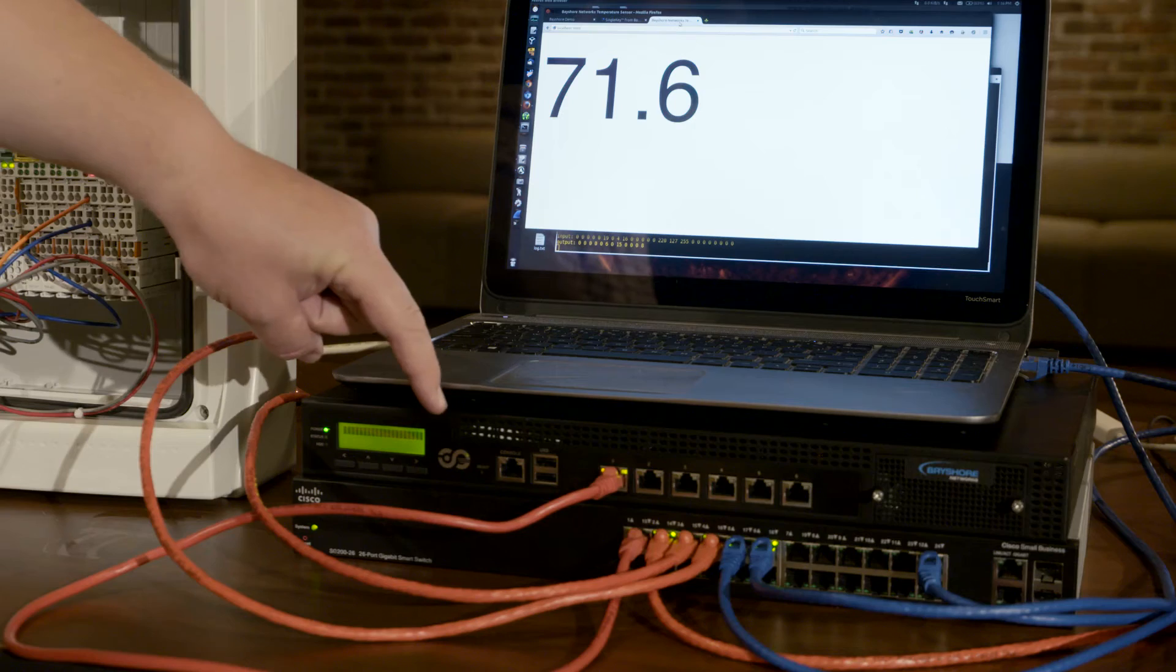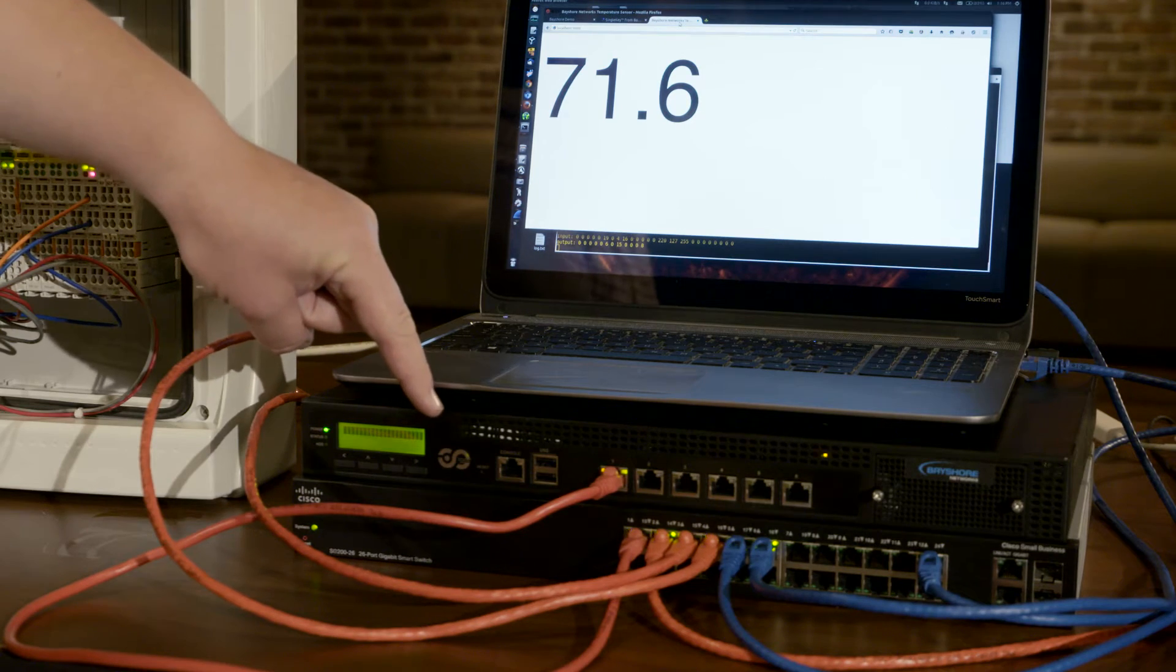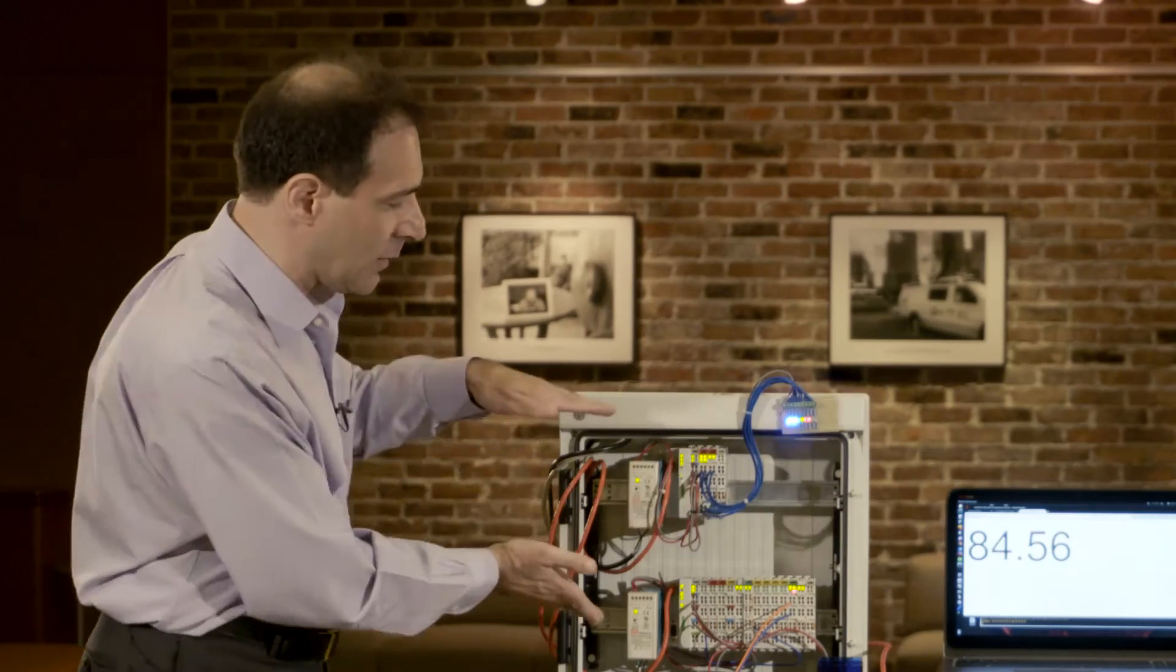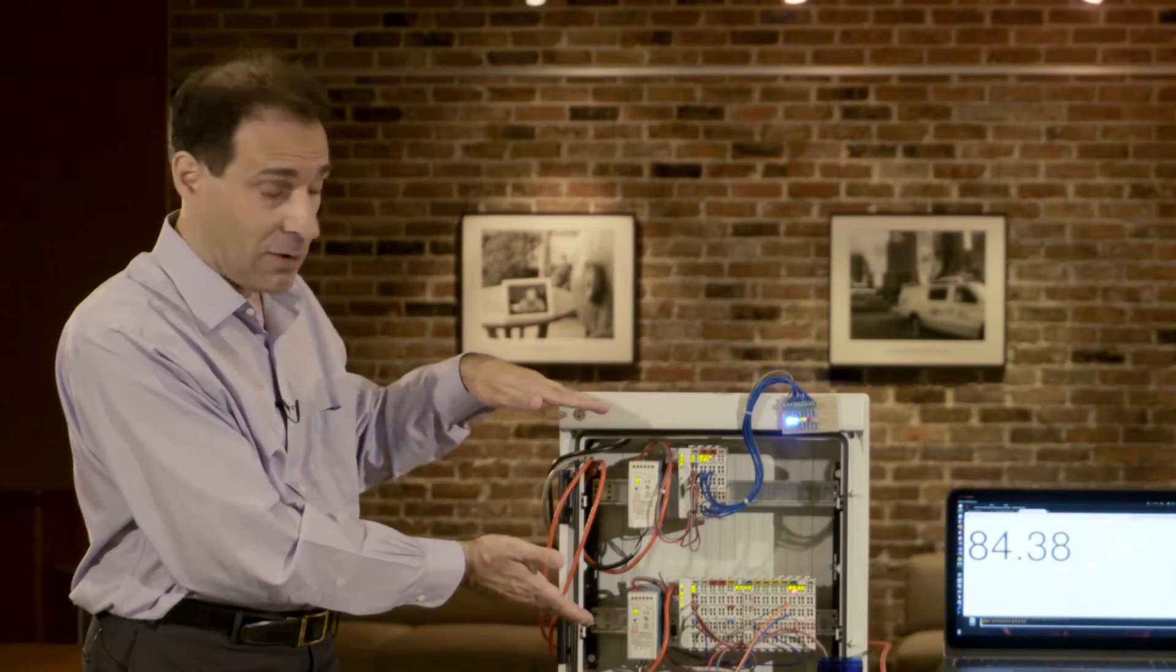Right here we have a Bayshore appliance which is deployed in the network between Site A and Site B, and it's inspecting the Modbus traffic and looking at the data going through, and it can tell when data is inappropriate or probably part of an attack.